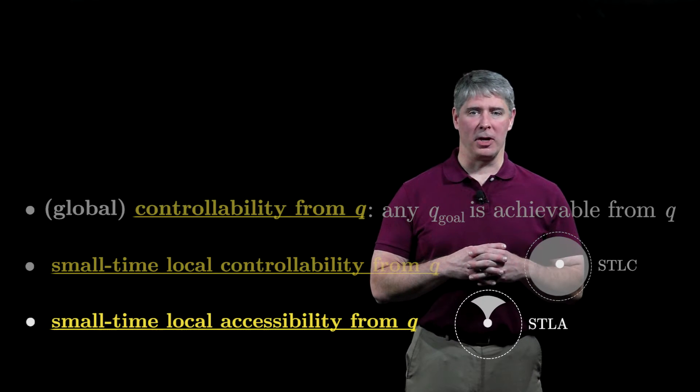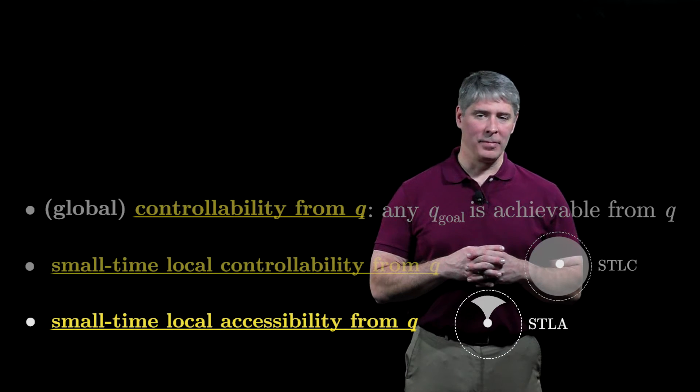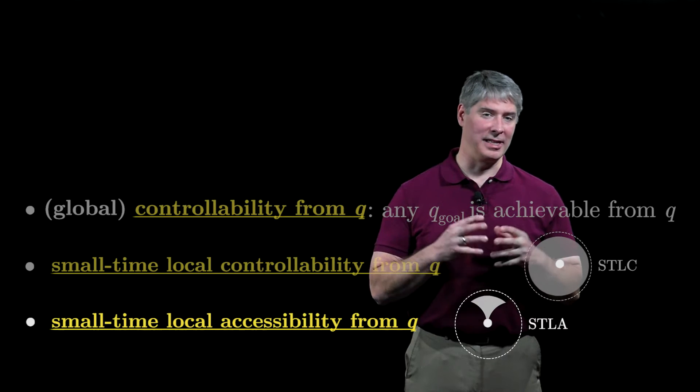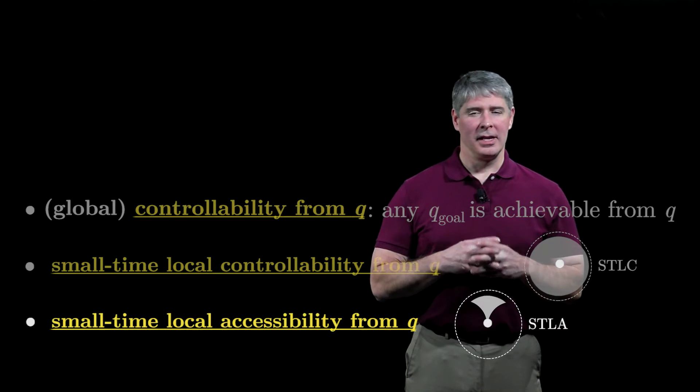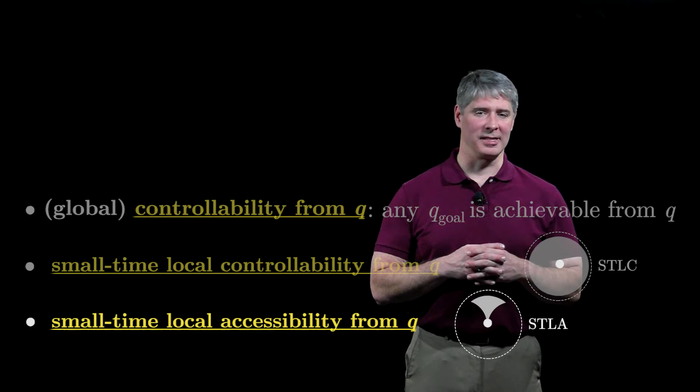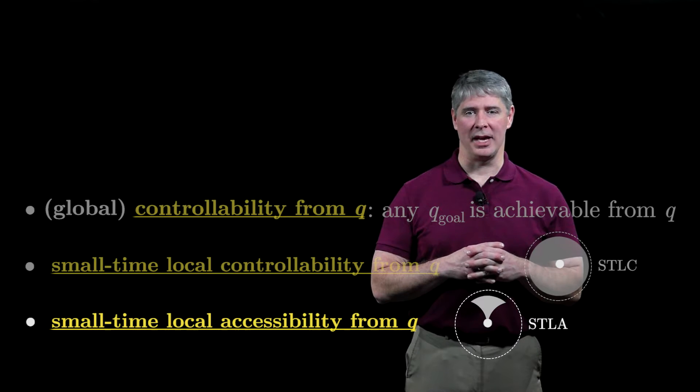We say the robot is small-time locally accessible from q, or STLA, if the locally reachable set is full-dimensional but does not contain the initial configuration in the interior. In these definitions, small-time refers to the fact that the property holds as the time T goes to zero, and local refers to the fact that the property holds as the neighborhood becomes arbitrarily small.